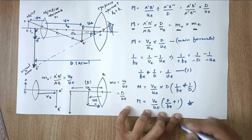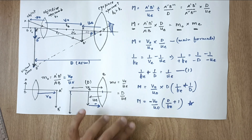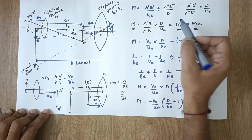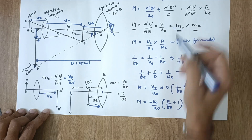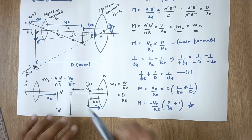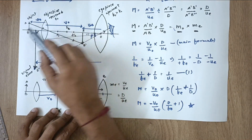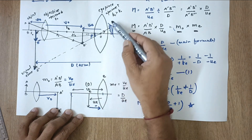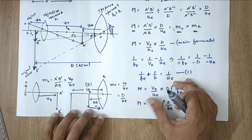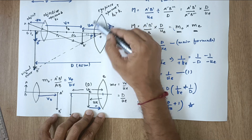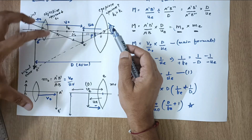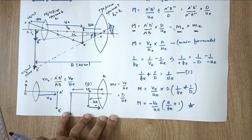This gives our final equation: M = (vo/uo)(D/fe + 1). In most textbooks a negative sign appears here because the objective forms a real image, giving a negative linear magnification, so M = −(vo/uo)(D/fe + 1). Also note that the objective lens produces linear magnification, while the eyepiece produces angular magnification — the eyepiece behaves like a simple microscope.